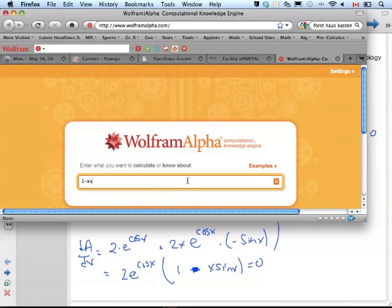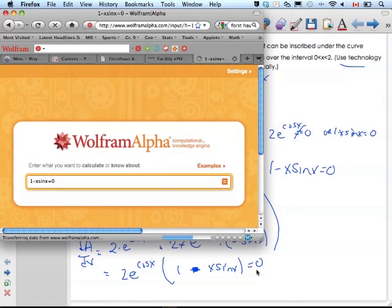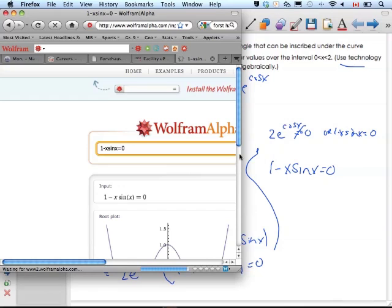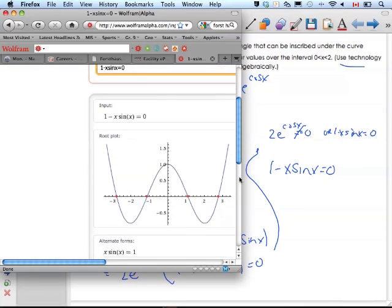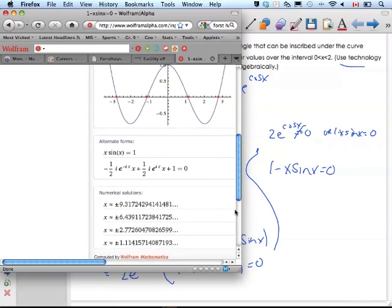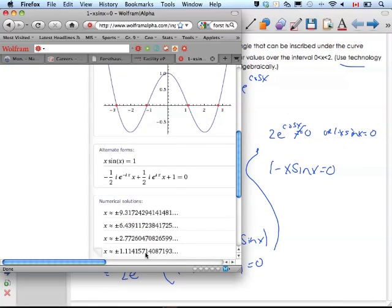I know that 1 minus x sine x equals 0. If I solve, I get all these values here, plus or minus all those x values.